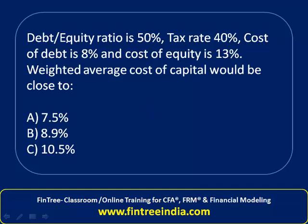Let's read the question carefully. Debt to equity ratio is 50%, tax rate 40%. We have cost of debt, cost of equity, and we have been asked to calculate the weighted average cost of capital. The best way to deal with these questions on the exam is to make a simple schedule like this, with equity and debt columns.